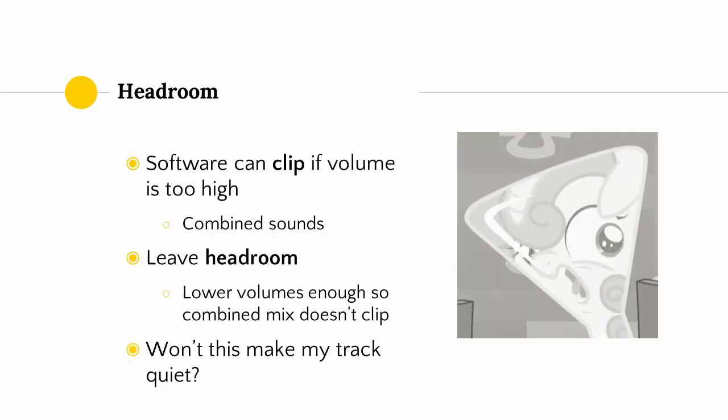Before we get into panning, let's talk about something called headroom. Just as a microphone clips when your gain is set too high, your software can clip if you're playing sounds with a volume level that's too high. Most music is composed from multiple sounds, so even if you have two sounds that aren't clipping on their own but are just below clipping, combining them together may cause clipping. So one thing you want to do is leave headroom in your tracks — set the volume of each track low enough that the combined mix doesn't clip.